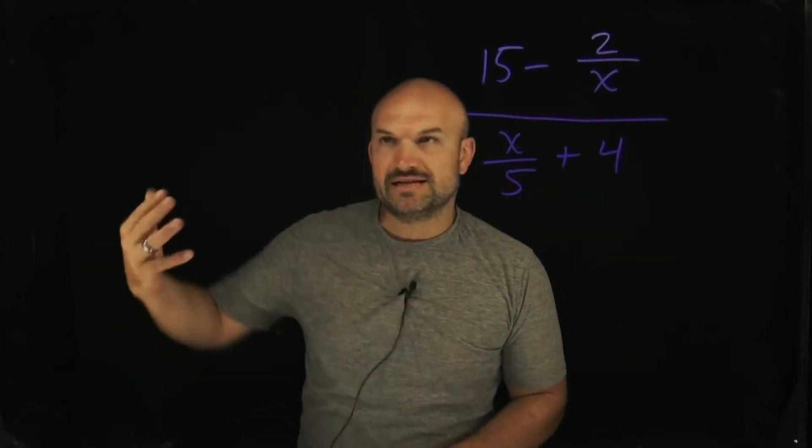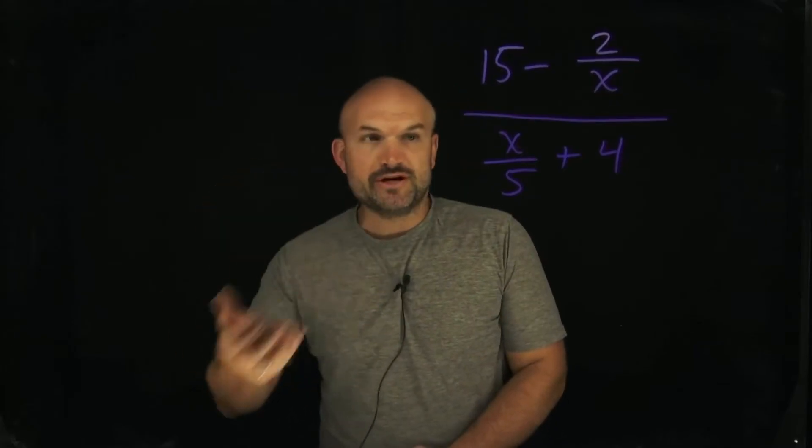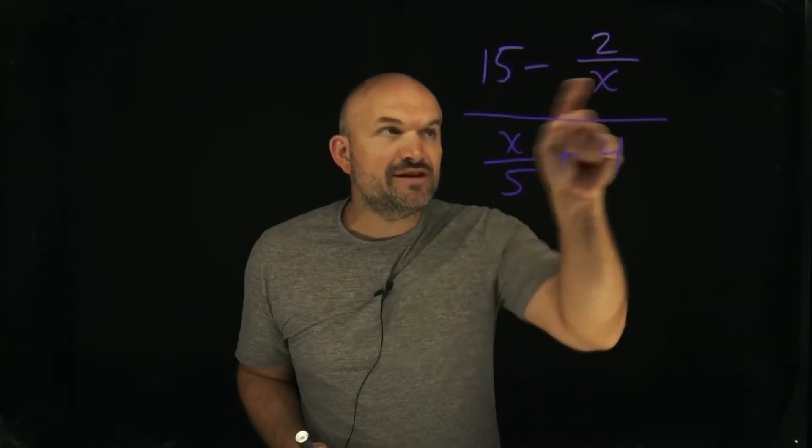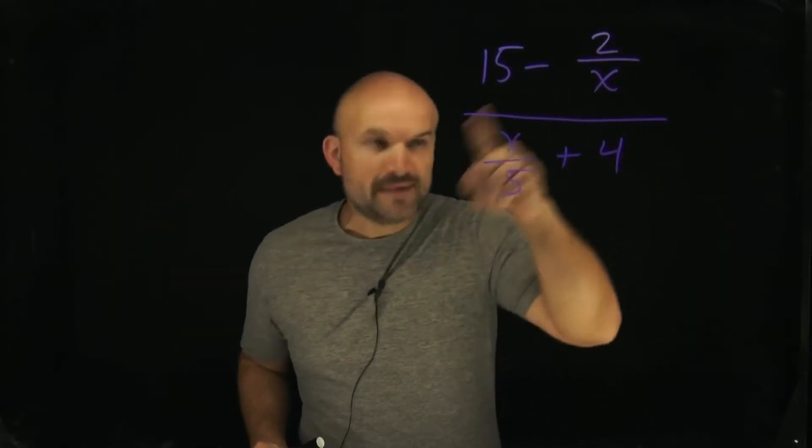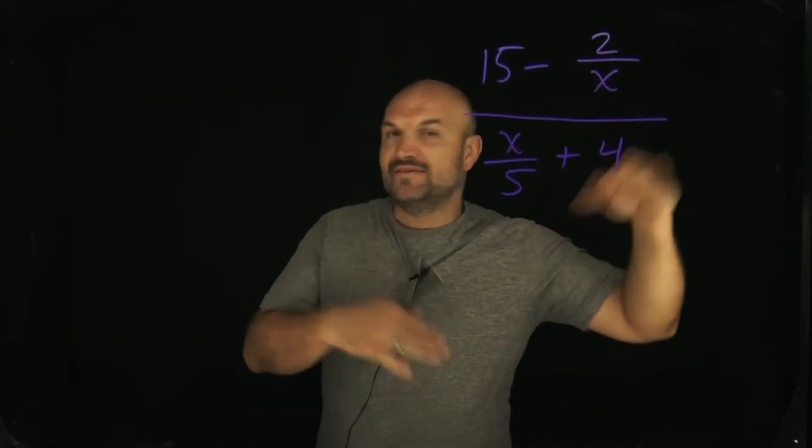In previous videos, I talked about the easiest way to get rid of a fraction is to find a number or expression that the denominator evenly divides into. The problem that we have here is we have two different denominators. We know 5 divides into 5, so that would be good. We could multiply everything by 5. And we know x divides into x, so we can multiply everything by x.